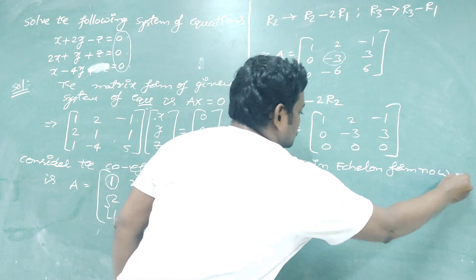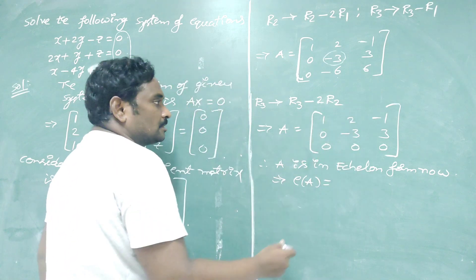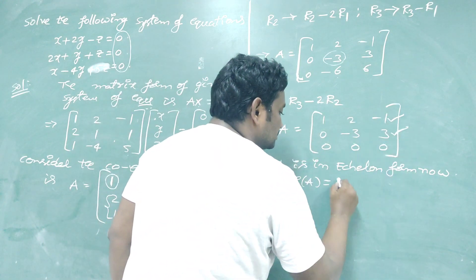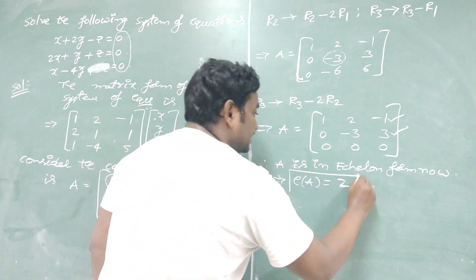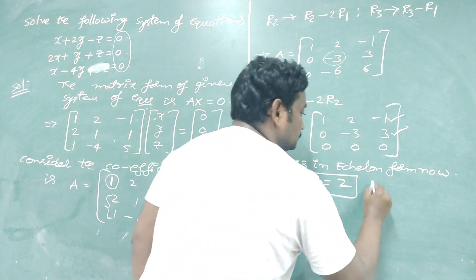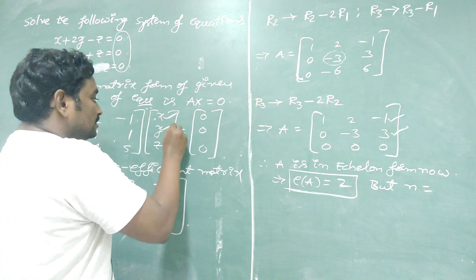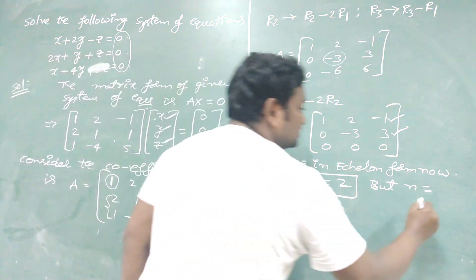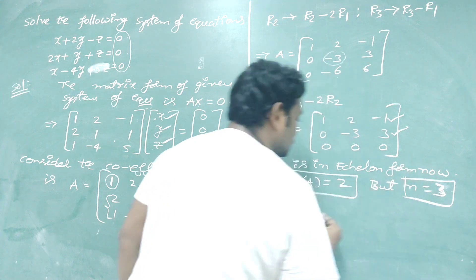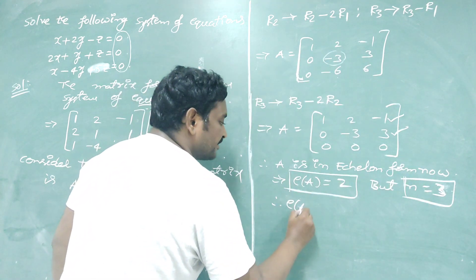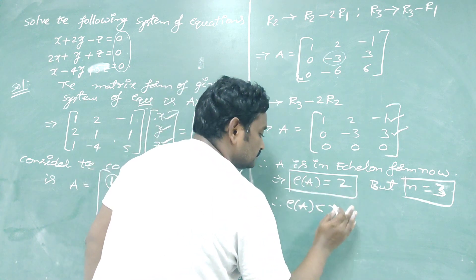The rank of A equals the number of non-zero rows. Only the first two rows are non-zero, so rank of A = 2. The number of variables n = 3 (x, y, z). We observe that rank of A is less than n.